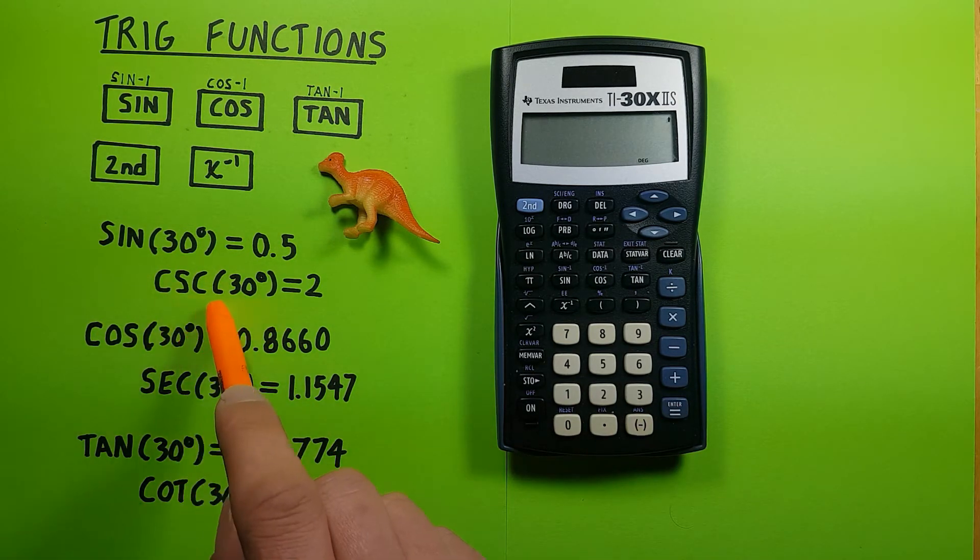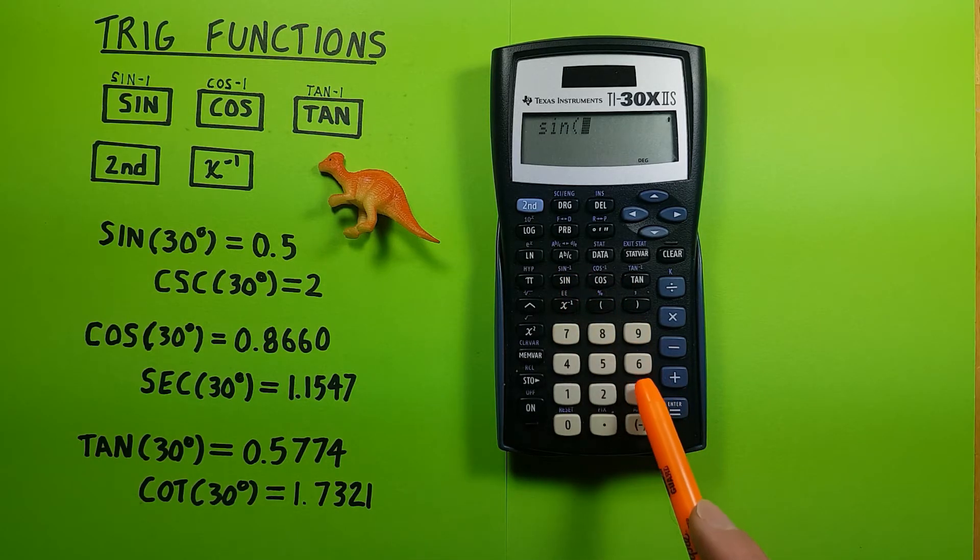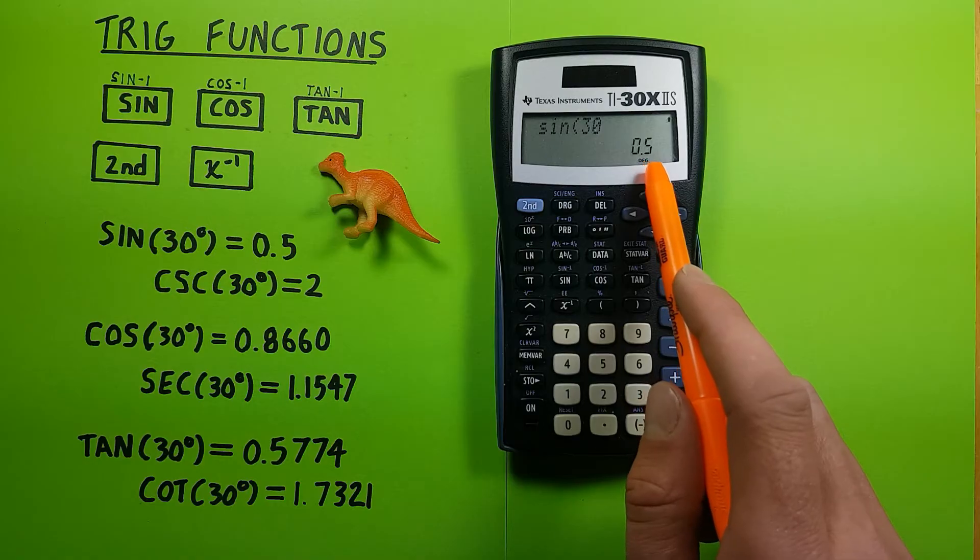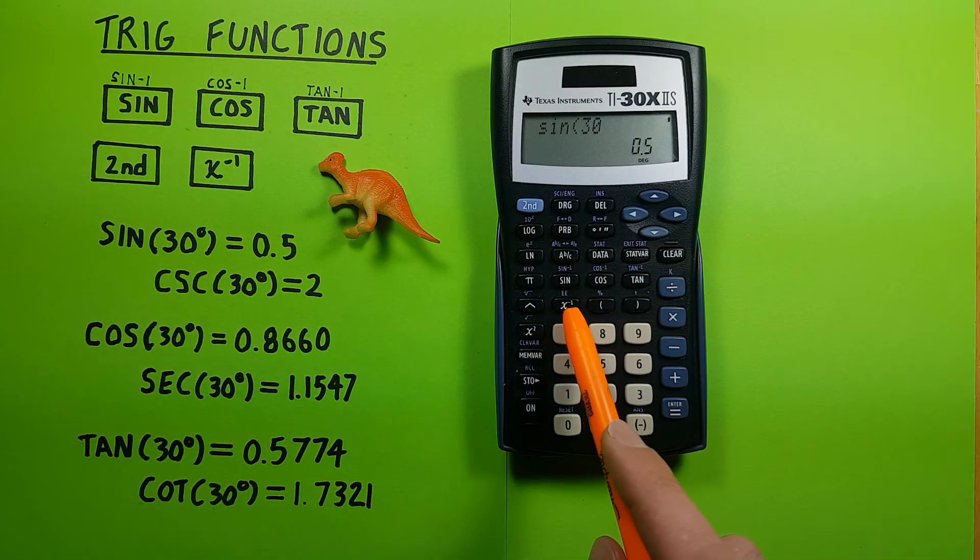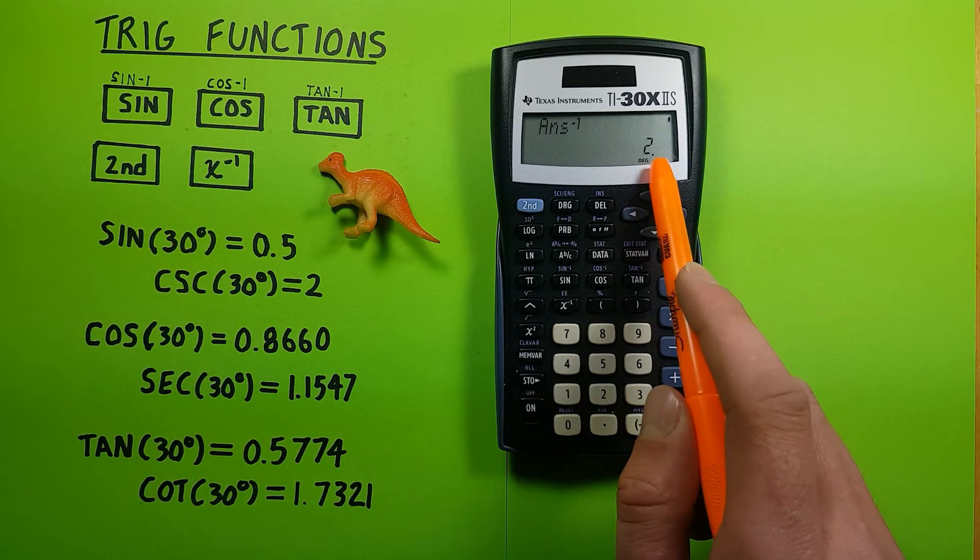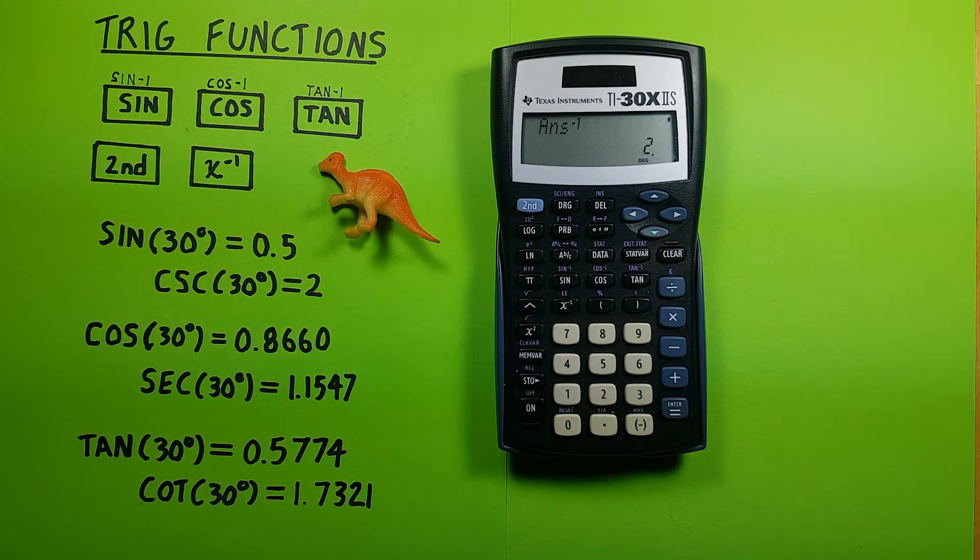If we want to find the cosecant of 30, we go sine 30 equals, get to that 0.5, and then we use this x to the power of negative 1 key or inverse key, and we see we get a cosecant of 30 degrees equal to 2.